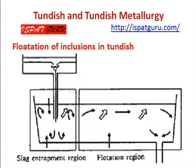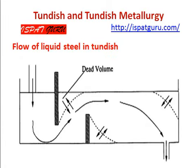This shows the flow of steel into the tundish and how the flotation of inclusions is taking place. This also shows the flow of metal from the ladle to the mold and shows the dead volume of the tundish and how it interacts with the tundish zones.